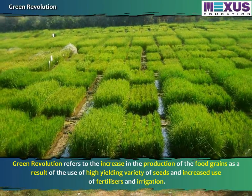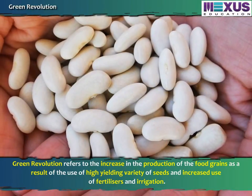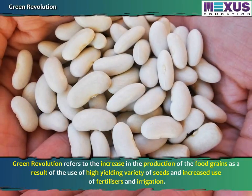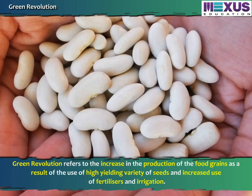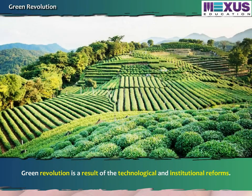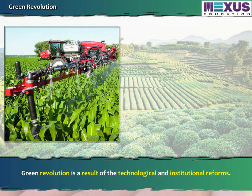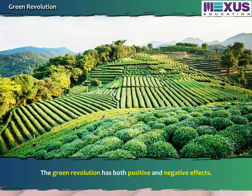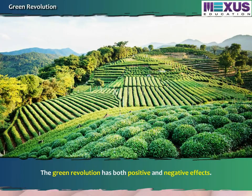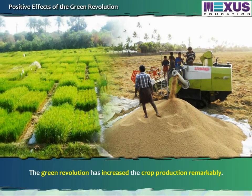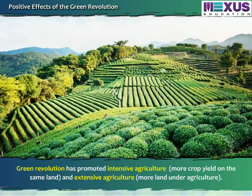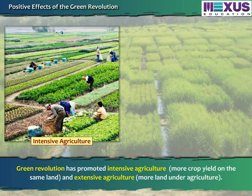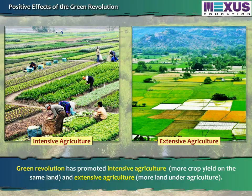The Green Revolution refers to the increase in the production of food grains as a result of the use of high-yielding variety of seeds and increased use of fertilizers and irrigation. The Green Revolution is a result of technological and institutional reforms. It has both positive and negative effects. Positively, it has increased crop production remarkably and promoted both intensive agriculture — more crop yield on the same land — and extensive agriculture, meaning more land under cultivation.